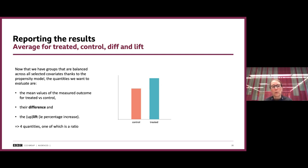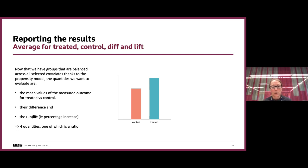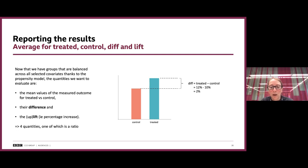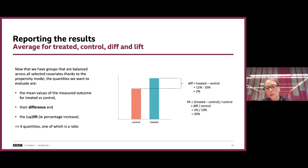Now we've done all this work and we're finally going to report results. We want to report the average outcome for the treated group, for the control group, the difference, and the uplift (percentage increase). For example, if the control outcome is 10% and the treated is 12%, the difference is 2% and the lift is 20%. The lift is nicely linked to the risk ratio: lift equals risk ratio minus one. We also want confidence intervals to know whether the observed difference is statistically significant.